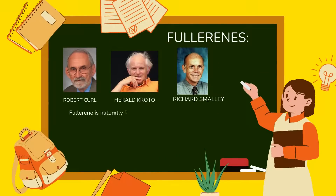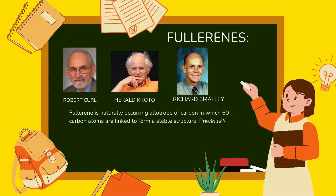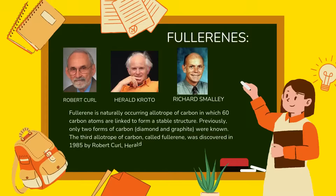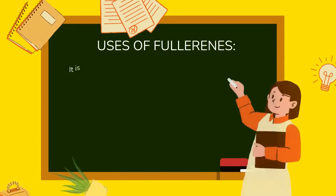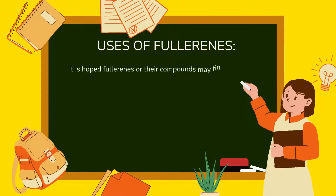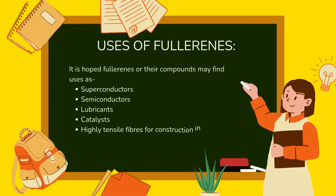Fullerenes: fullerene is a naturally occurring allotrope of carbon in which 60 carbon atoms are linked to form a stable structure. Previously only two forms of carbon — diamond and graphite — were known. The third allotrope, fullerene, was discovered in 1985 by Robert Curl, Harold Kroto, and Richard Smalley. It contains 60 or more carbon atoms. Fullerenes or their compounds are hoped to find uses as superconductors, semiconductors, lubricants, catalysts, highly tensile fibers for the construction industry, and inhibiting agents against the AIDS virus.